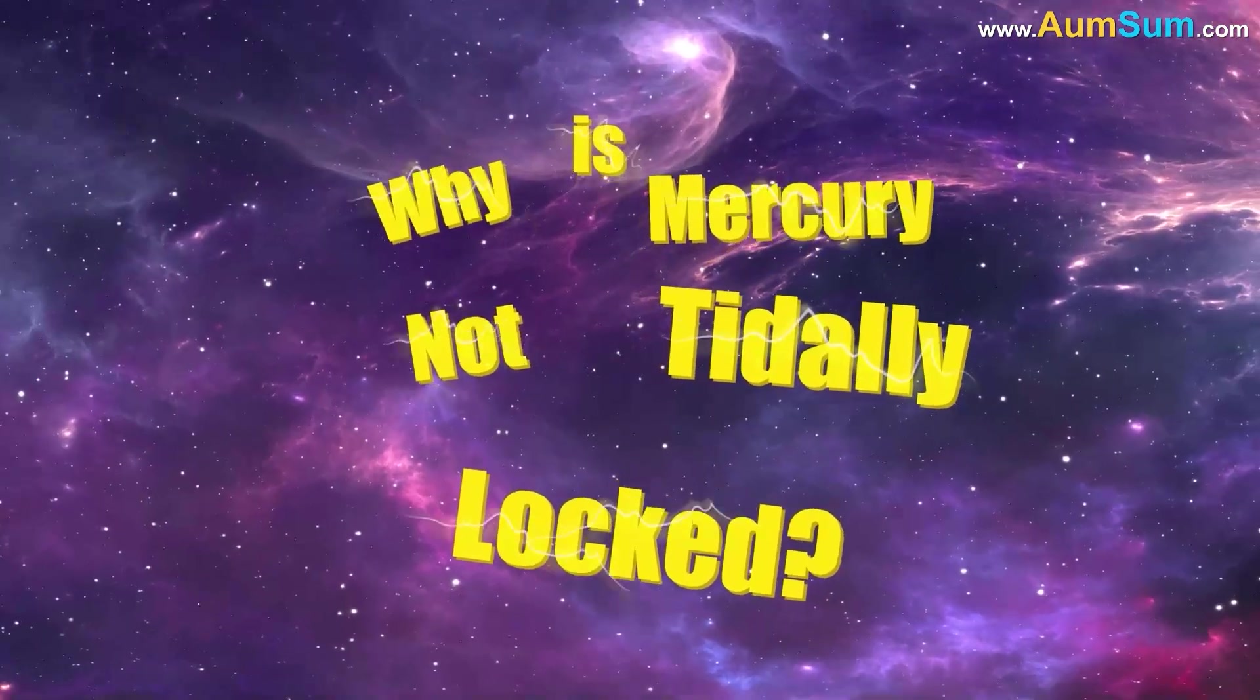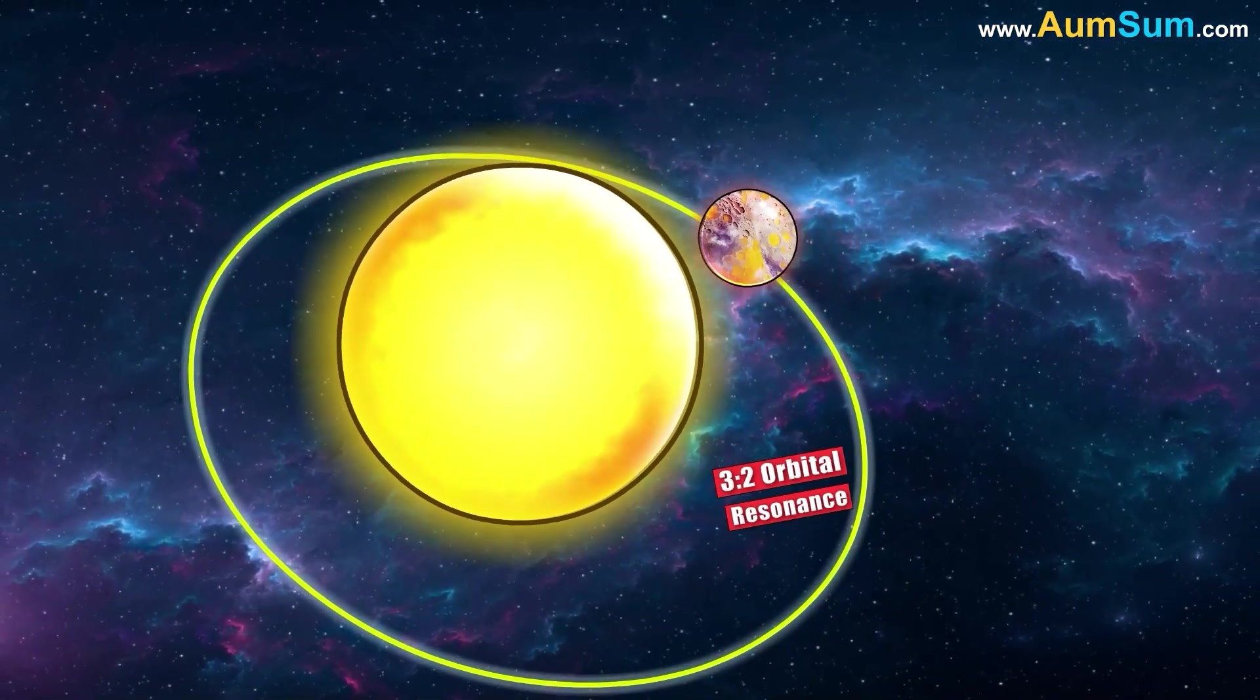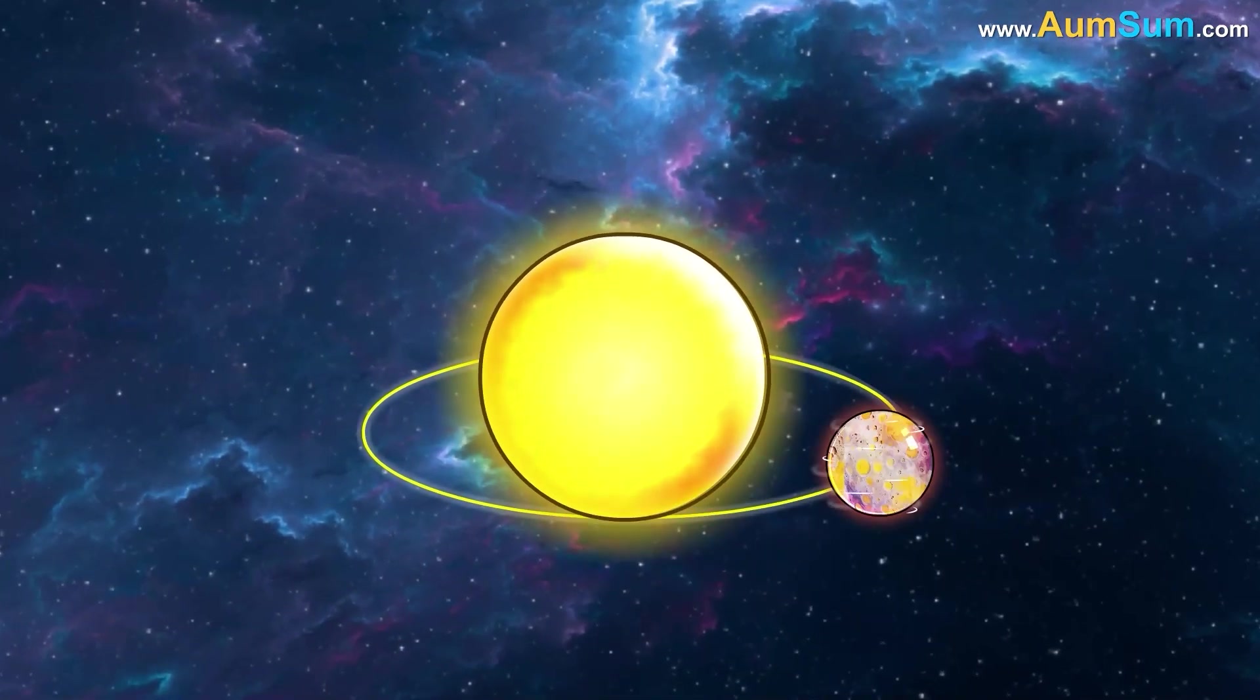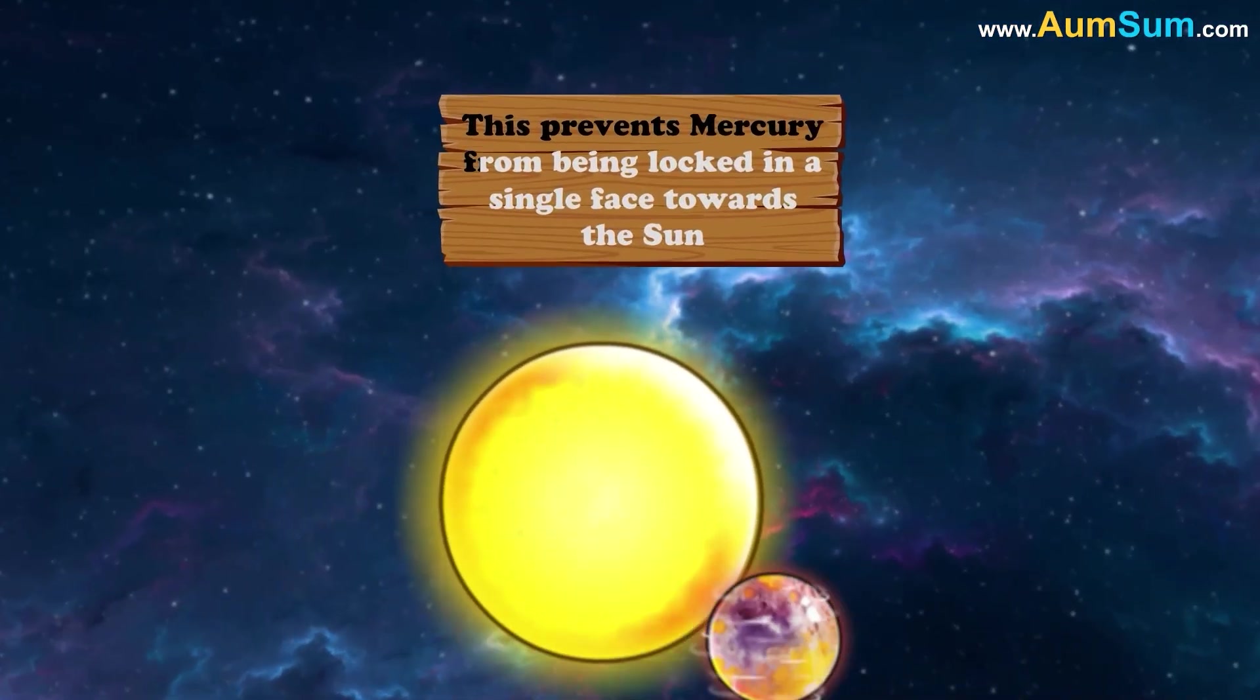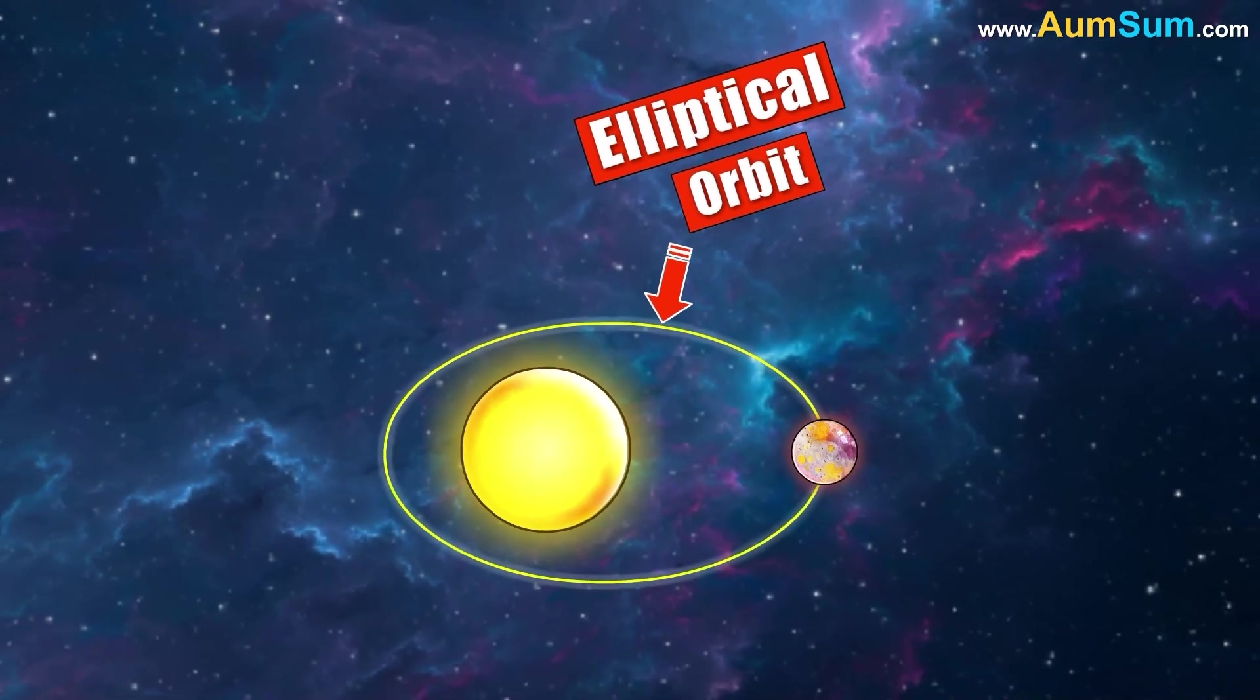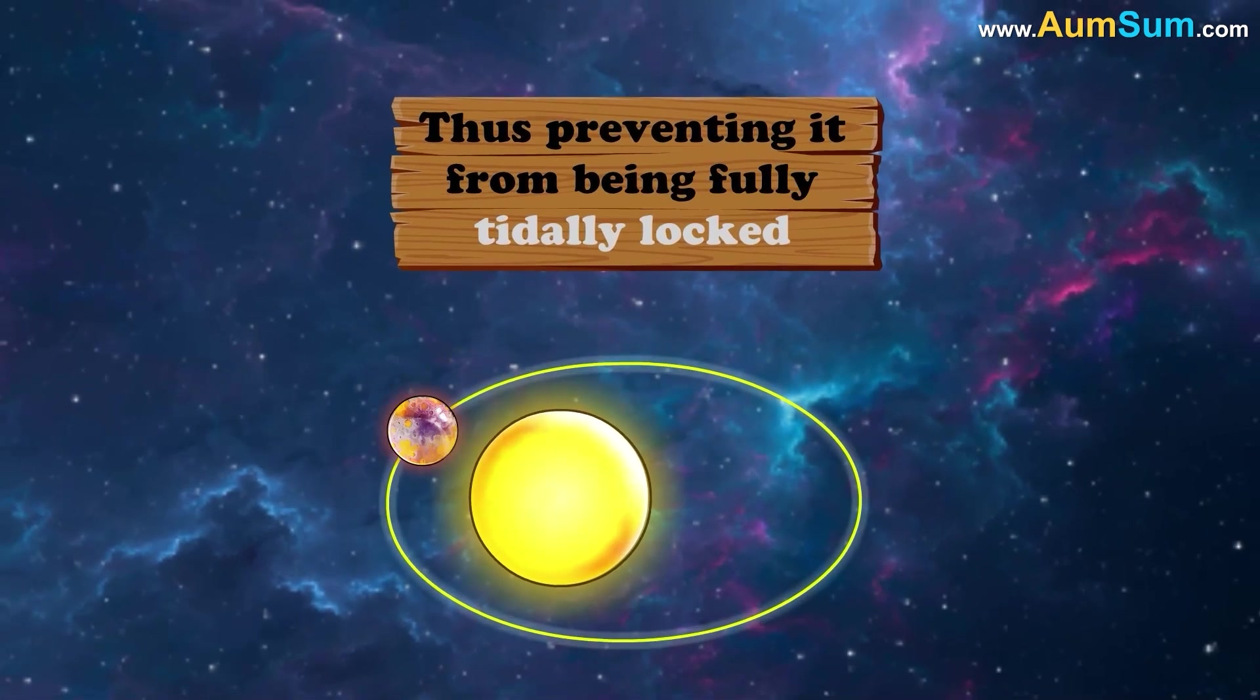Why is Mercury not tidally locked? Mercury is not tidally locked to the sun because it is in a 3x2 orbital resonance. This means that Mercury rotates three times on its axis for every two orbits it makes around the sun. This prevents Mercury from being locked in a single face towards the sun. The reason for this is Mercury's elliptical orbit around the sun. This orbit causes its speed to vary significantly, thus preventing it from being fully tidally locked.